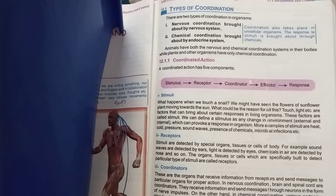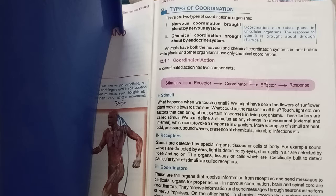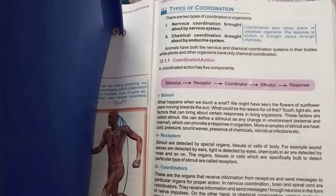Coordination also takes place in unicellular organisms. It is a response to the external environment. Unicellular organisms, which are made up of only one cell, also have coordination. In response to the external environment — which provides the stimuli — they carry out coordination through chemicals. Unicellular organisms use chemical secretions for this purpose.